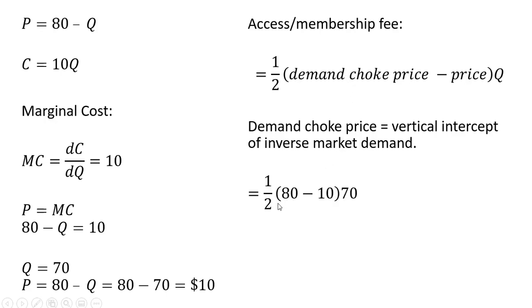So one-half times 80 minus the price, which we just solved for is $10, and the Q we just solved for is 70. So simplifying this, we get an access fee or membership fee of $2,450.